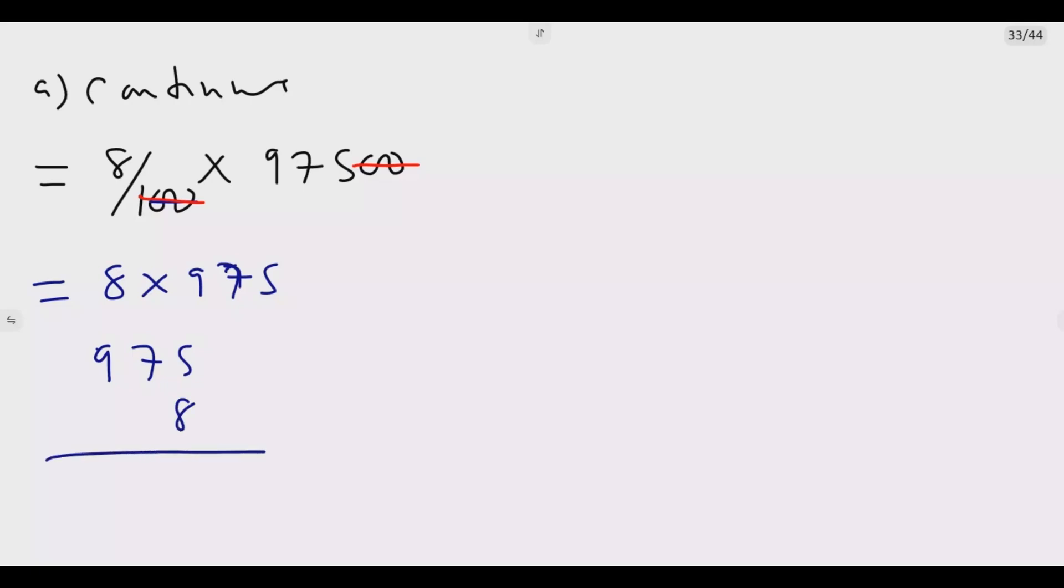Then this becomes even easier. It's just a matter of doing 975 times 8. 8 times 5 is 40, carry 4. 8 times 7 is 56, plus 4 is 60, carry 6. Then 8 times 9 is 72, plus 6 is 78.